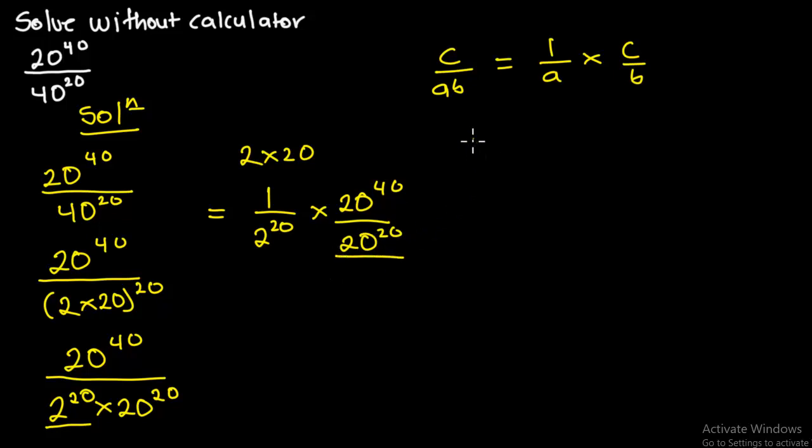For instance, when we have a to the power m all over a to the power n, the law of indices states that when we are dividing two numbers with the same base we are going to subtract the exponent. And so we are going to have a exponent m minus n.